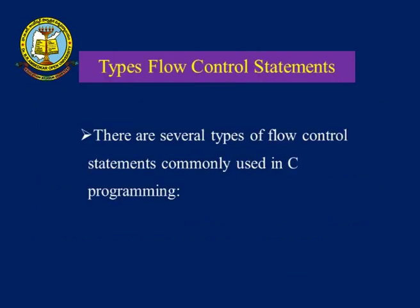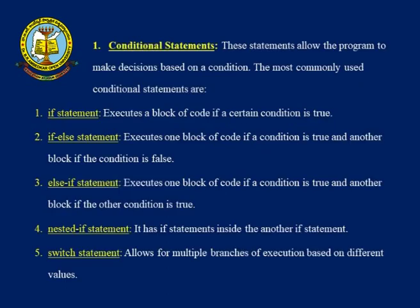There are different types of flow of control statements in C programming language. The first one is conditional statements. These statements allow the programmer to make a decision based on a condition. If the condition is true, a certain set of instructions will be executed. If the condition is false, another set of instructions will be executed.